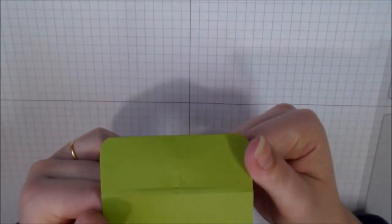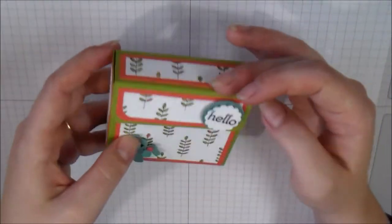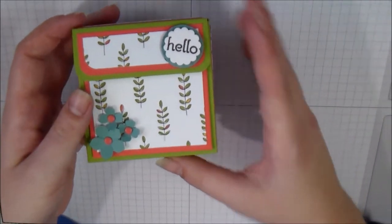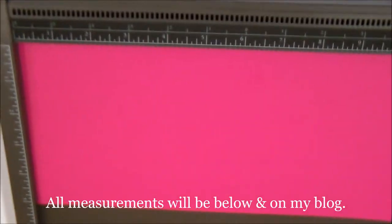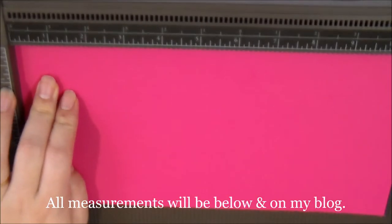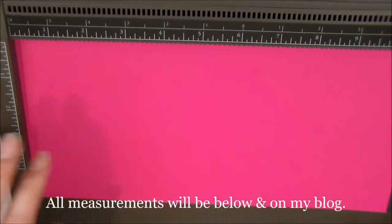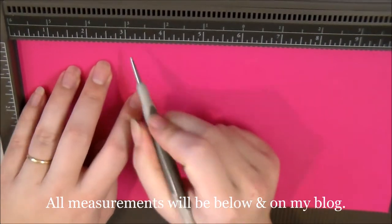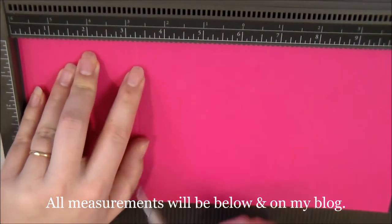I did make some changes because I wasn't exactly happy with how that flap went together. So we're starting with a piece of cardstock that is 10 and 7/8 by 5 and 1/4. This is Melon Mambo, and then we're going to score at 3 and 1/4.